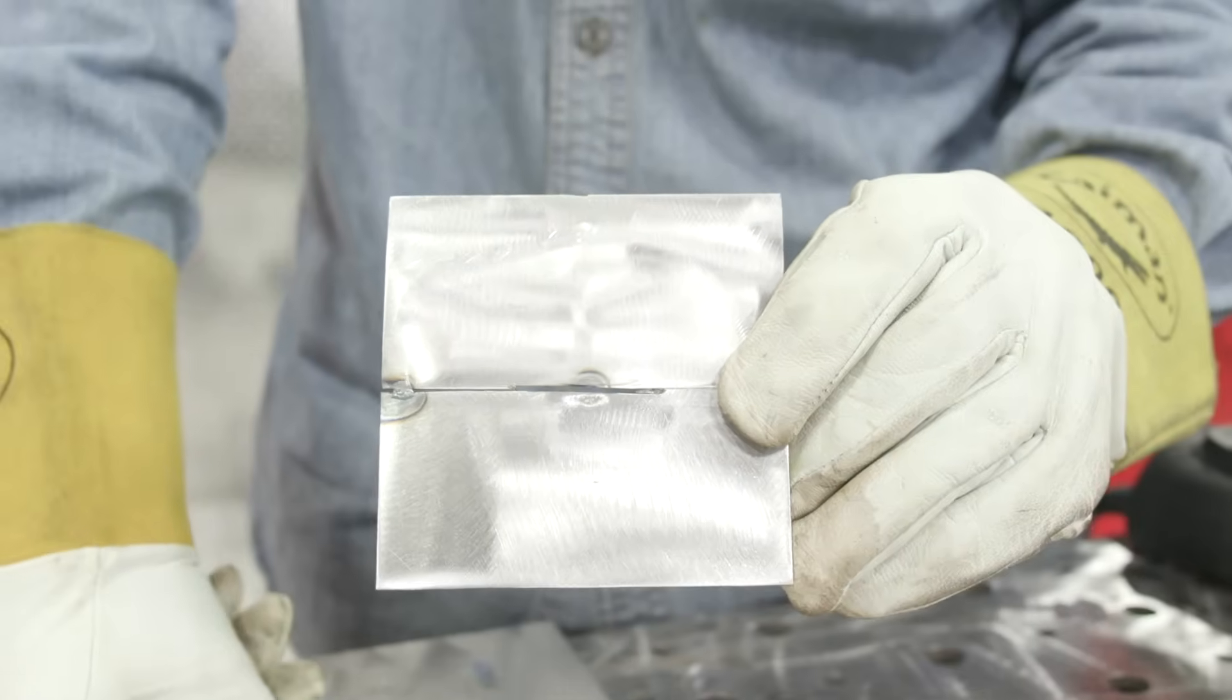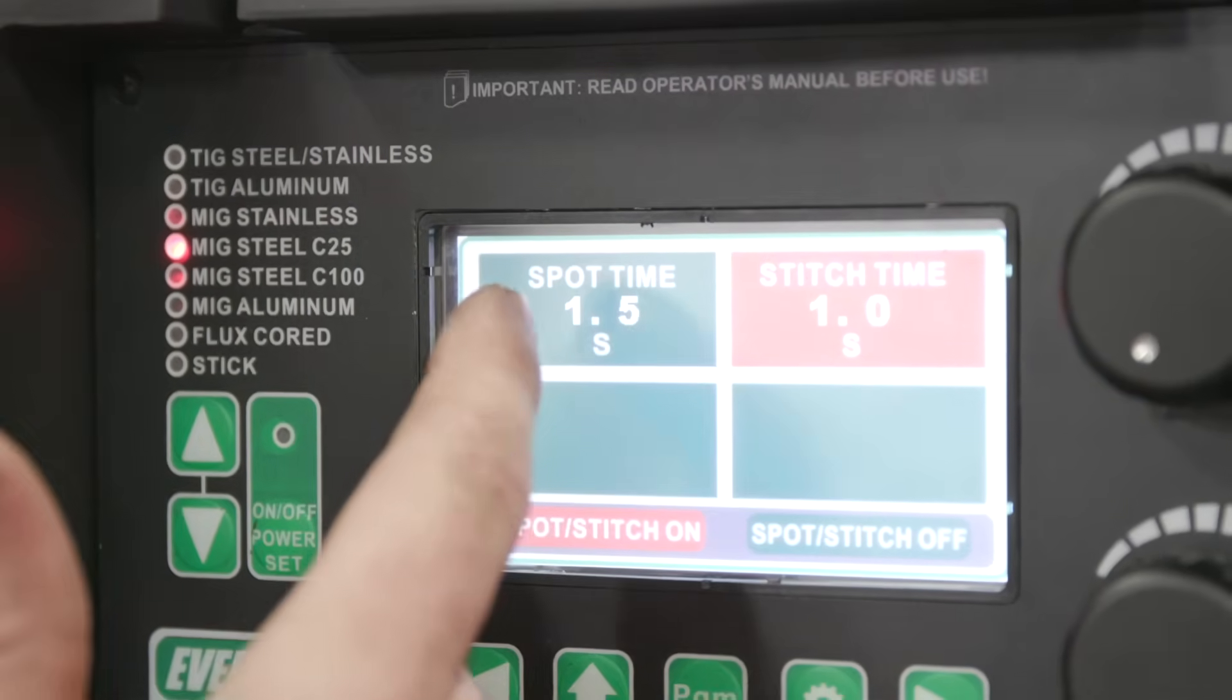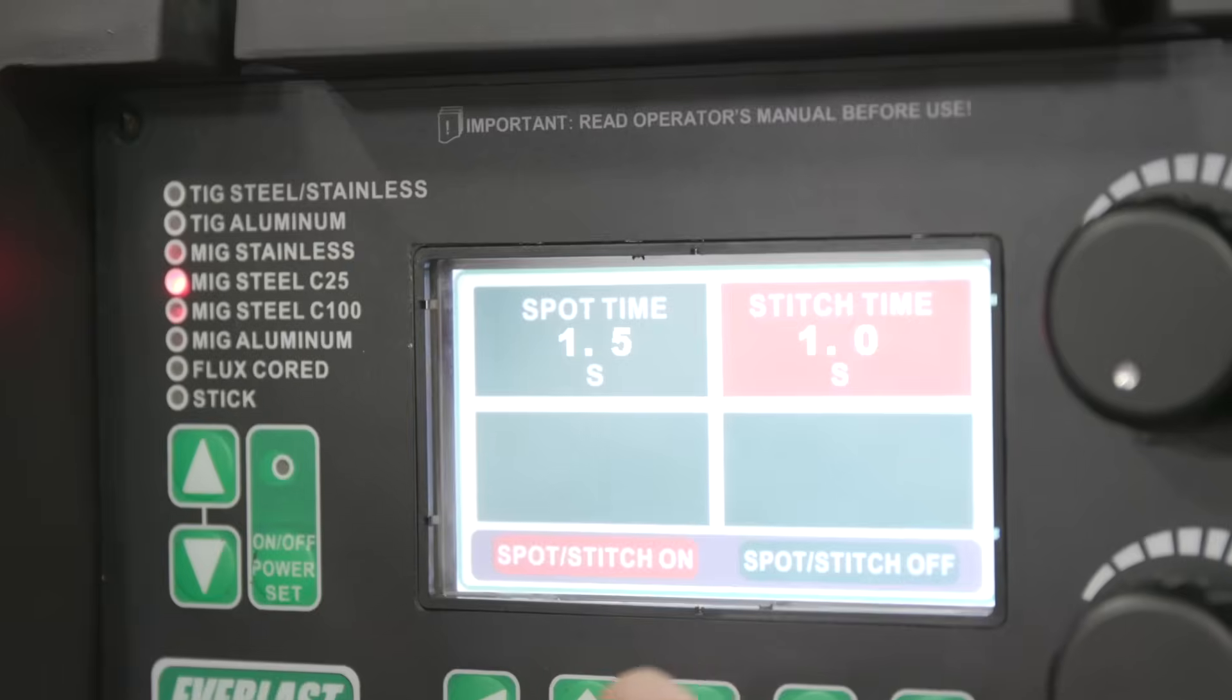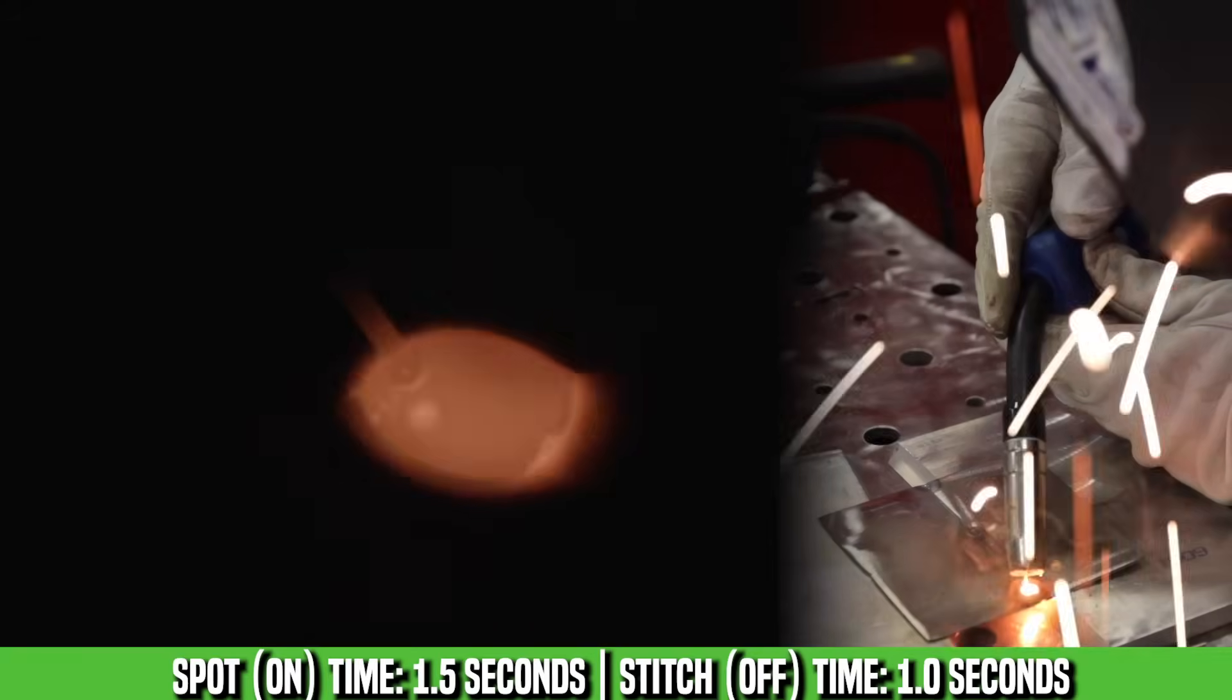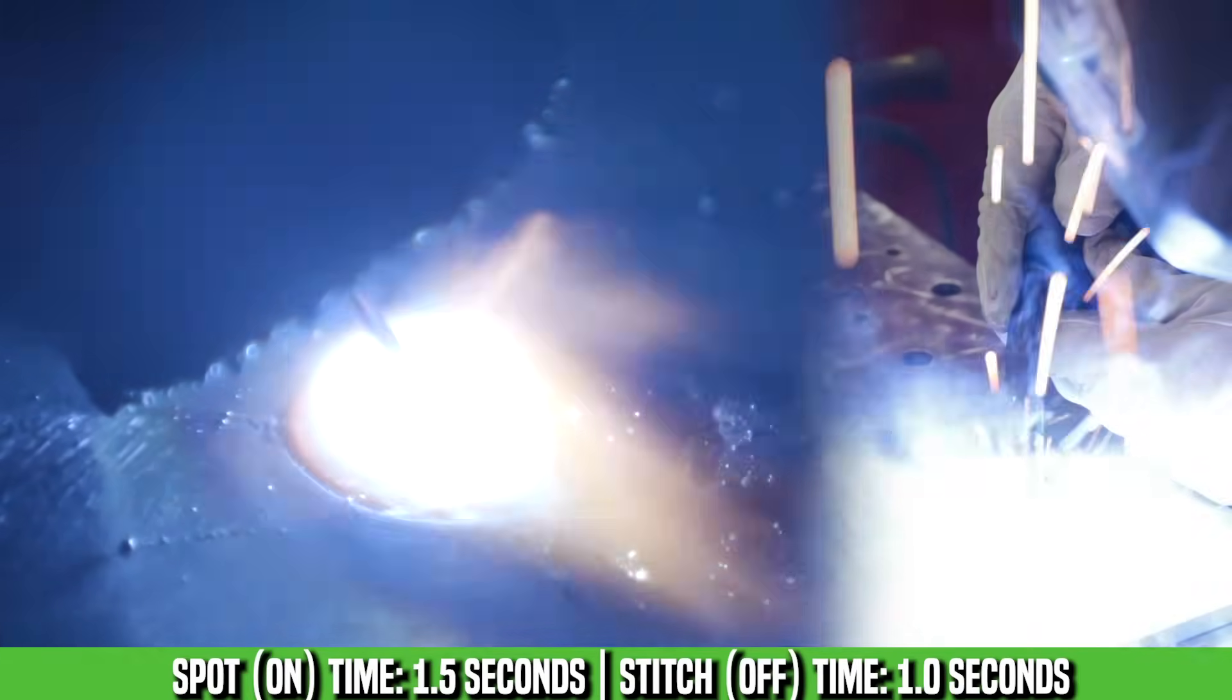On this Everlast 275 MTS, this has got a pretty neat feature, the spot timer and the stitch timer. When you set your spot time to, let's say, half a second, it comes on for half a second. Then when you have your stitch timer, you set that to one and a half seconds, it goes off. That's one cycle. It does that all the way around.